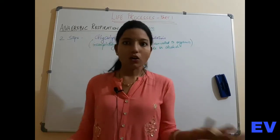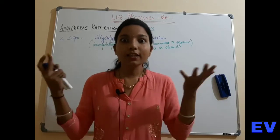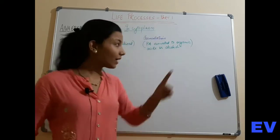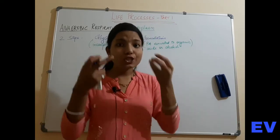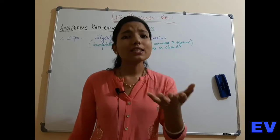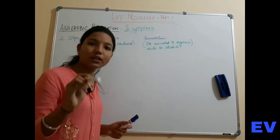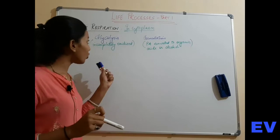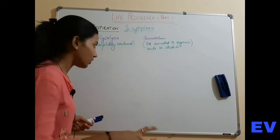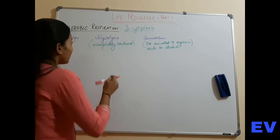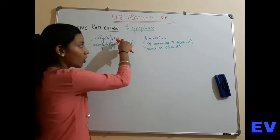Now, anaerobic respiration happens in the cytoplasm. Remember this. In aerobic respiration, glycolysis also happens in the cytoplasm. The entire anaerobic respiration takes place in the cytoplasm. Glycolysis and fermentation are the two steps of anaerobic respiration. Glycolysis — what happens in glycolysis? In glycolysis, glucose is broken down to 2 pyruvic acid, same as before.